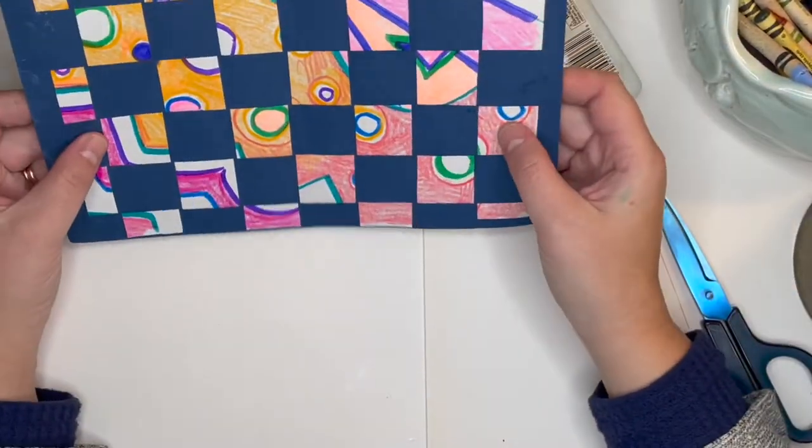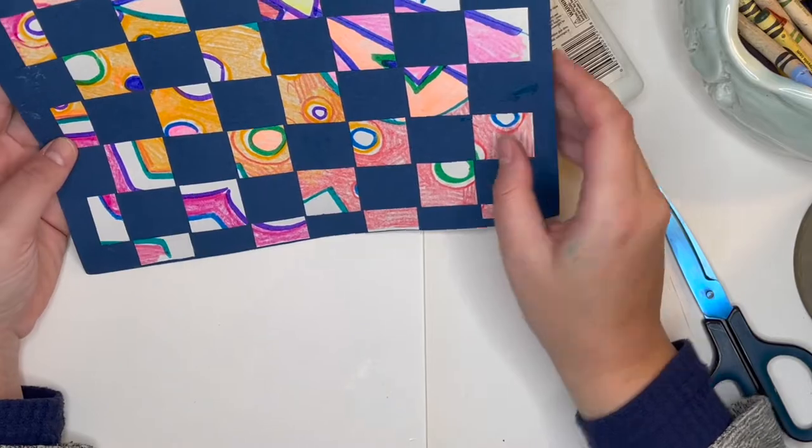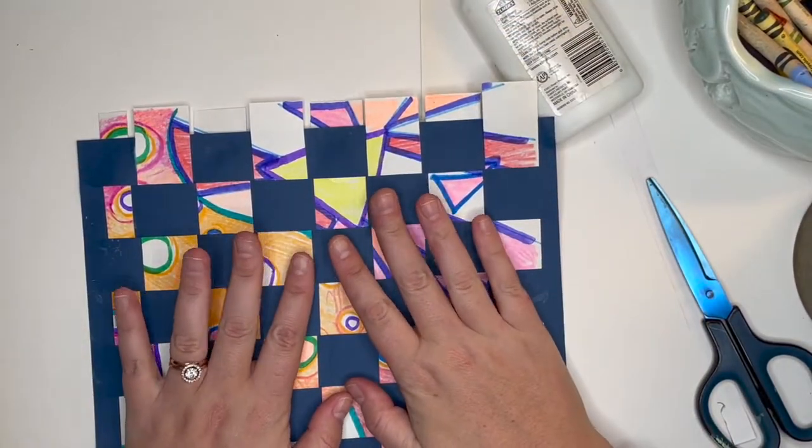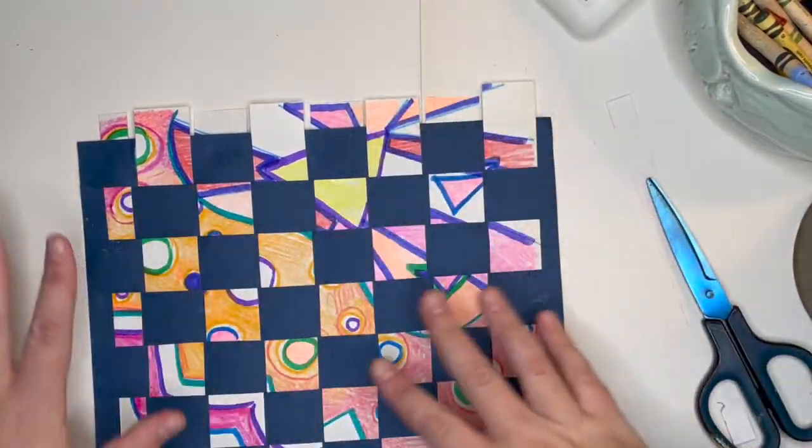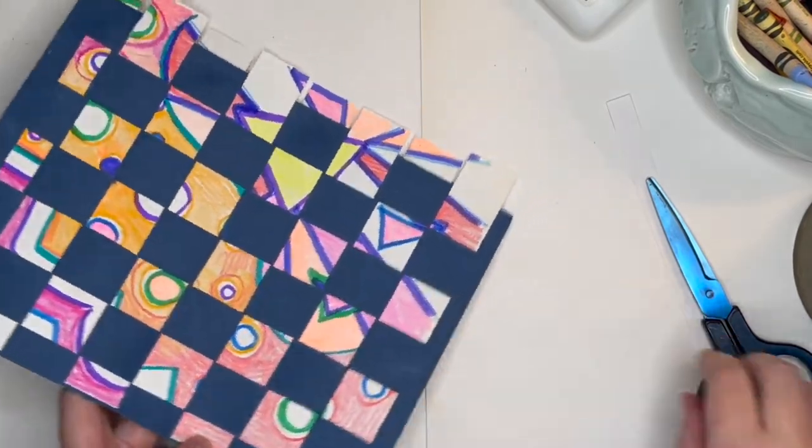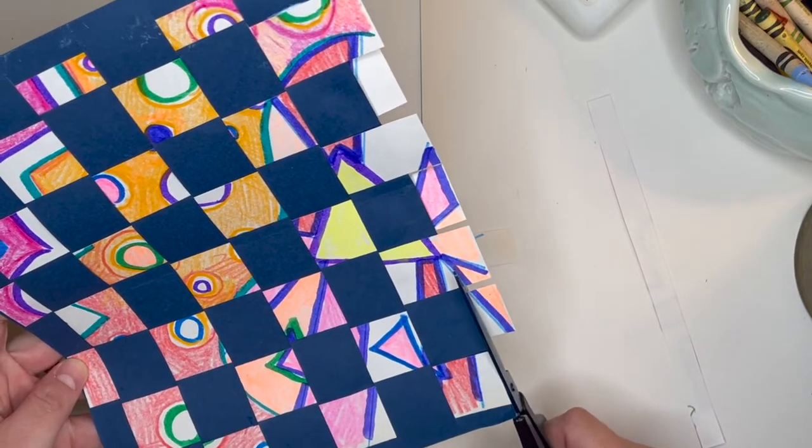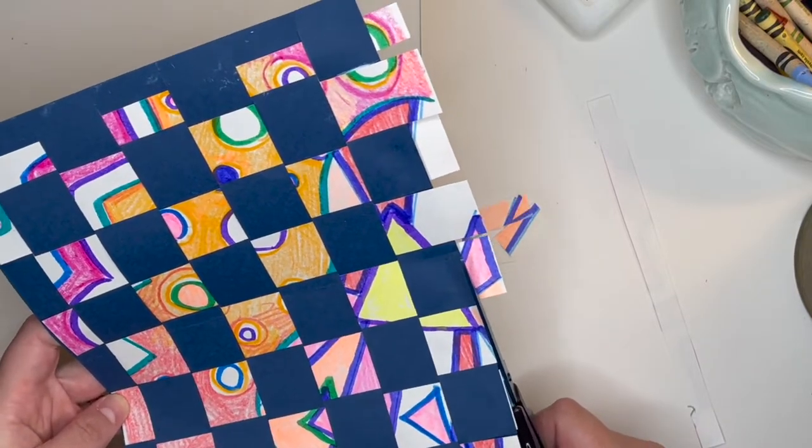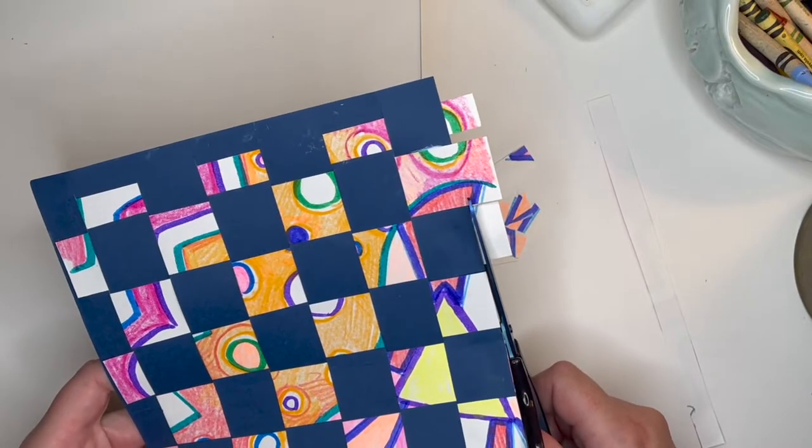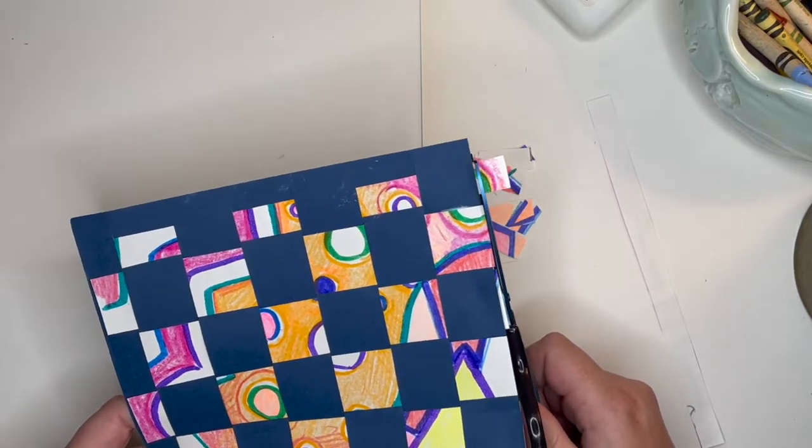Flipping your paper over, you'll be able to see your beautiful design that you drew before we cut it up in a neat different checkerboard pattern. If you'd like, feel free to snip off these extra pieces at the end. And of course, once you're finished, upload a photo to Artsonia for me to leave you some feedback.